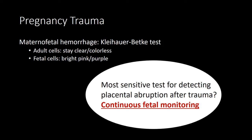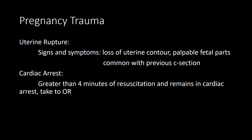In the event of maternal-fetal hemorrhage, you can use the Kleihauer-Betke test — adult cells stay clear and colorless while fetal cells appear bright pink. It has very low sensitivity, so the most sensitive test for detecting placental abruption after trauma is continuous fetal monitoring. For uterine rupture, signs and symptoms include loss of uterine contour or palpable fetal parts, and it's very common in mothers who previously had C-sections.